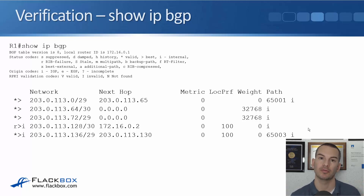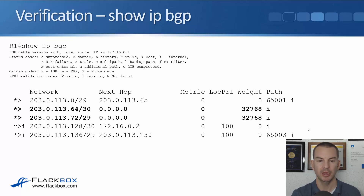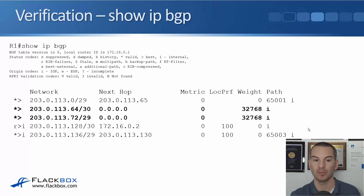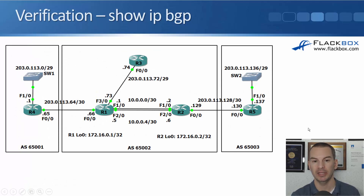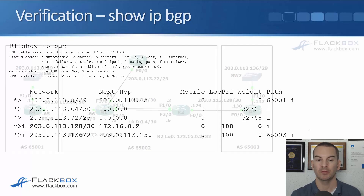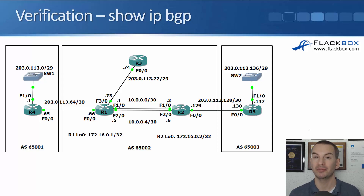Once everything is configured, to verify we're sending and receiving routes from BGP the command is show ip bgp — no keyword at the end. We can see five different routes in BGP. The first two — 203.0.113.64 and .72 — have a next hop of 0.0.0.0, meaning we're advertising them ourselves via network statements on R1. Those are the direct link to R3 and the direct link to R4.